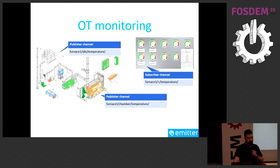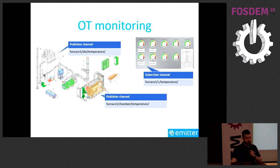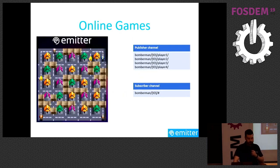Another use case is OT monitoring. We had a user at a crematorium — a crematorium has various pieces of machinery, each with various sensors. For example, there is a silo with a temperature sensor and chambers with a temperature sensor. The silo would publish to /silo/temperature and the chamber to /chamber/temperature. This user wrote a dashboard in Python — using our Python SDK — with a gauge that subscribes to +/temperature. The + is a wildcard that replaces one level, so it subscribes to all temperature sensors.